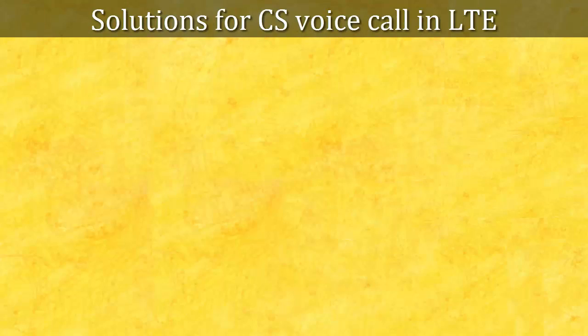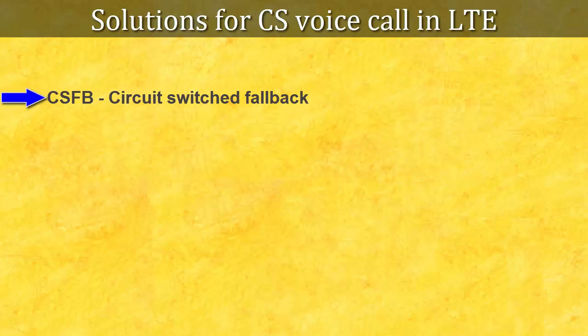Let's start with a very basic question: what are the solutions available in LTE for CS voice call? As we know, there is no CS domain present in LTE, so to make a voice call there are mainly two solutions. One solution is CSFB — Circuit Switched Fallback — in short, a procedure in which the LTE network redirects the UE to a legacy 3G or 2G network to complete the voice call.